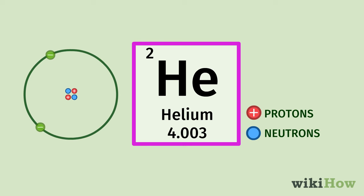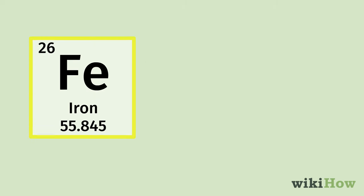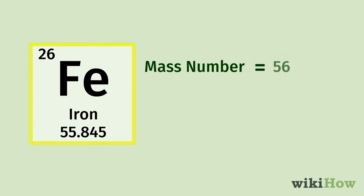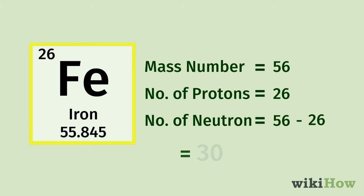You can use the atomic weight to figure out things like the number of neutrons in an atom of the element. To do this, round up the atomic weight to the nearest whole number to find the mass number, then subtract the number of protons. The resulting number is the number of neutrons in the atom.